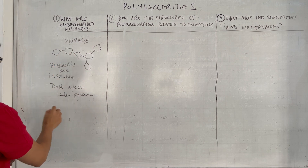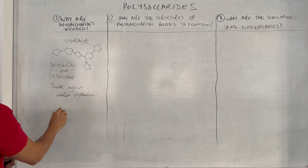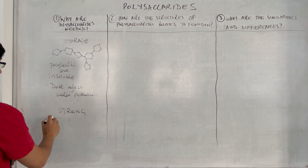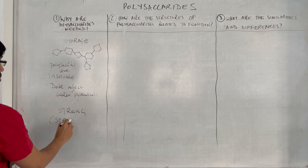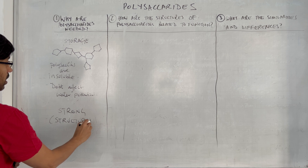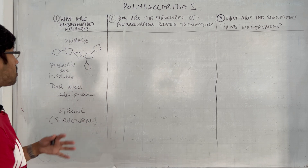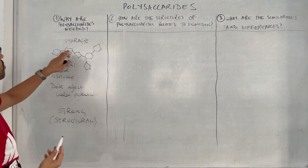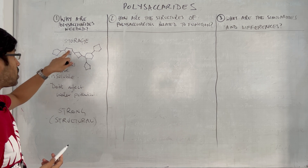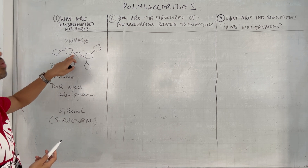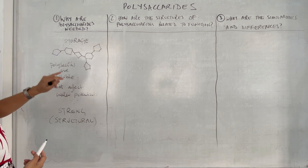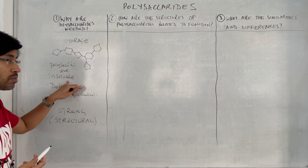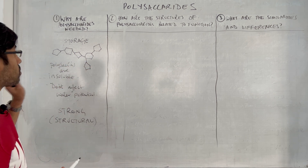Polysaccharides can also form strong structures, so they can be structural polysaccharides too. The key idea is they are made of many monosaccharides joined together with glycosidic bonds, forming structures that are insoluble and don't affect water potential.